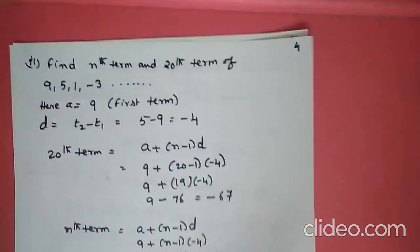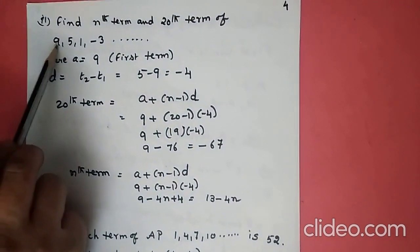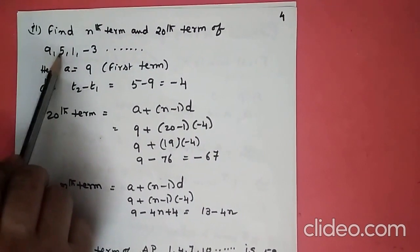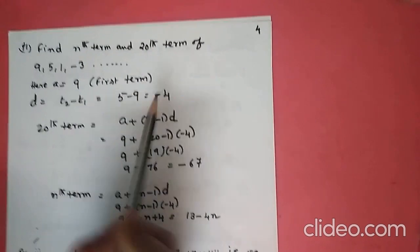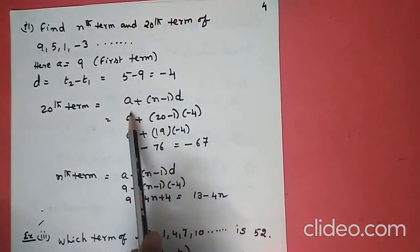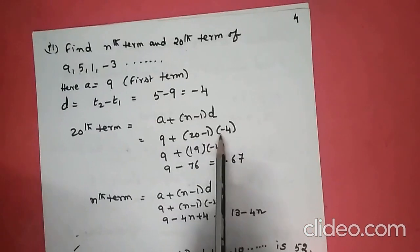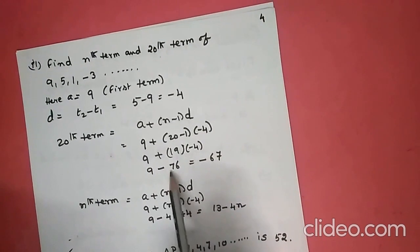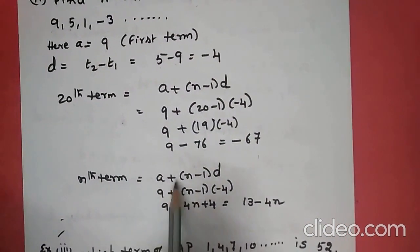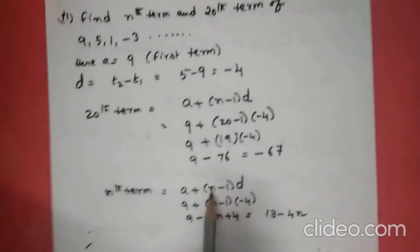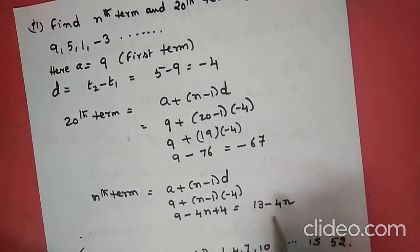Find the nth term and 20th term of the AP: 9, 5, 1, -3, etc. A is 9 and common difference D is 5 minus 9 equals minus 4. For the 20th term, apply the formula A + (N-1) × D: 9 + (20-1) × (-4) = 9 + 19 × (-4) = 9 - 76 = -67. For the general nth term: 9 + (N-1) × (-4) = 9 - 4N + 4 = 13 - 4N.